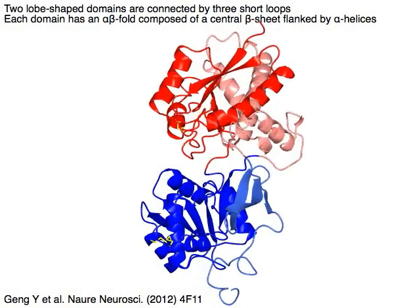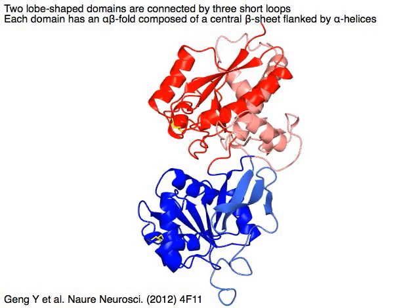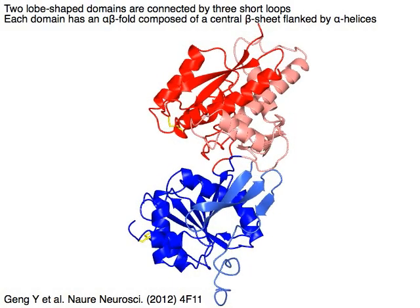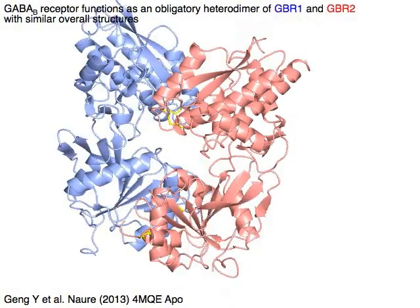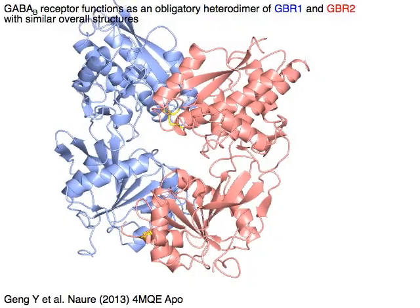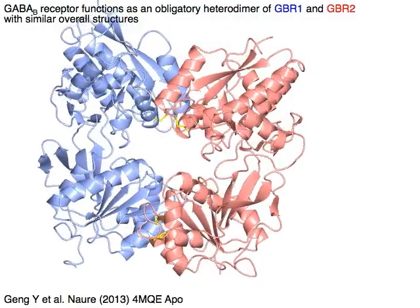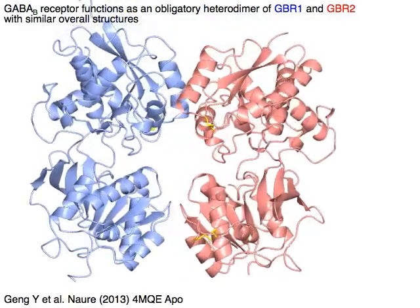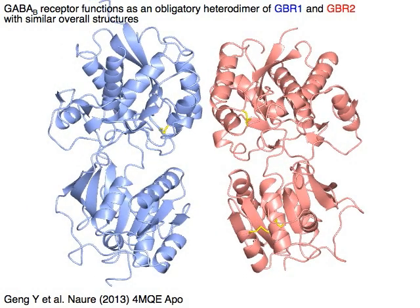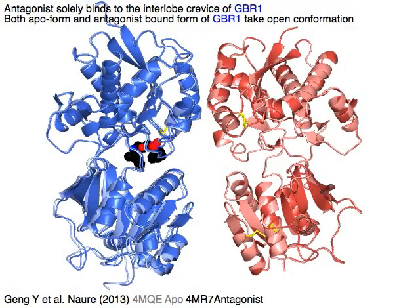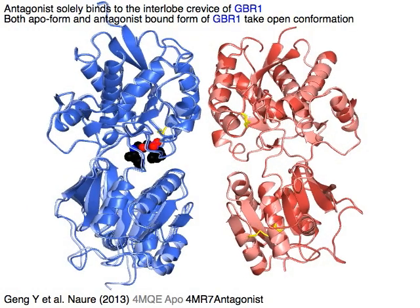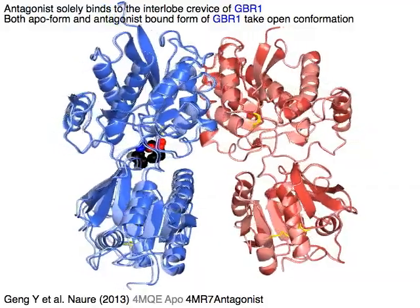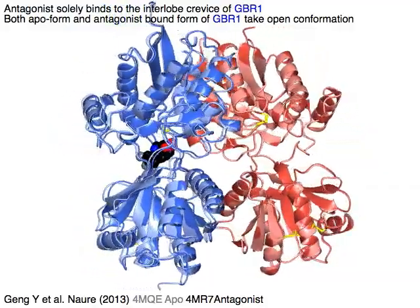Each domain has an alpha-beta fold composed of a central beta sheet flanked by alpha helices. GABAB receptor functions as an obligatory heterodimer of GBR1 in blue and GBR2 in red with similar overall structures. Antagonist solely binds to the interlobe crevice of GBR1 in blue.